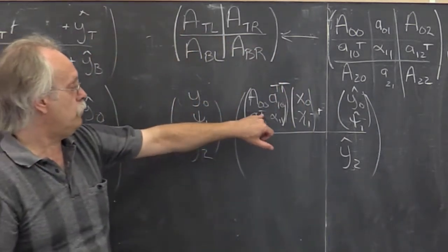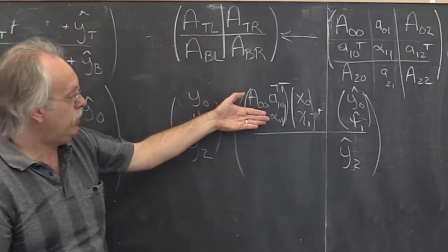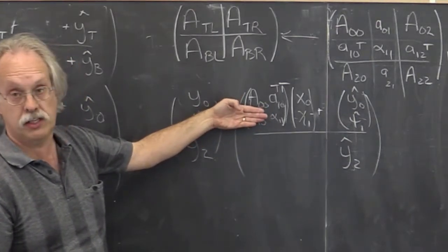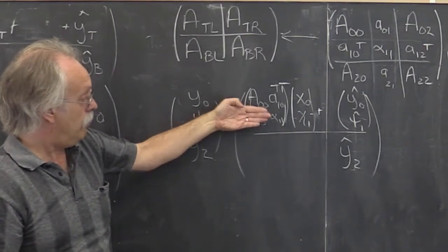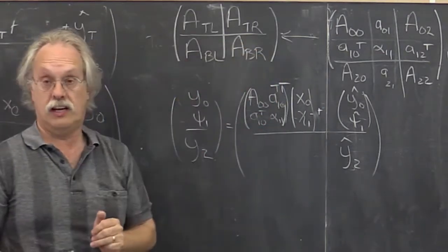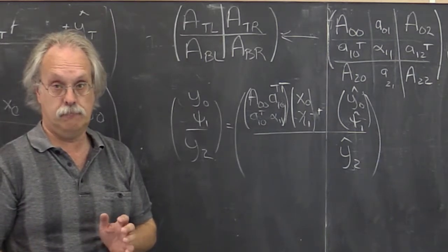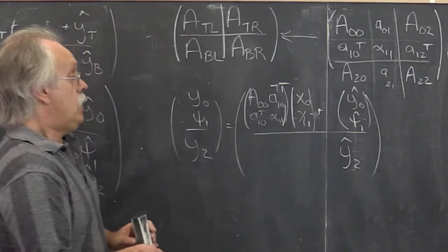Okay? Because the A one zero transpose really is a label that we give to this part of the matrix. And we need to take what's in that part of the matrix and transpose. You got it?